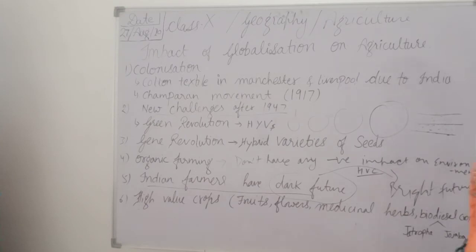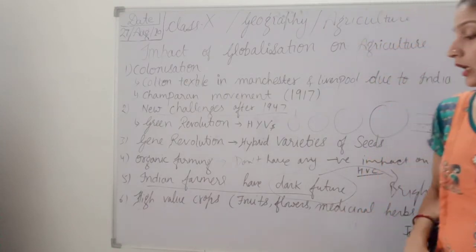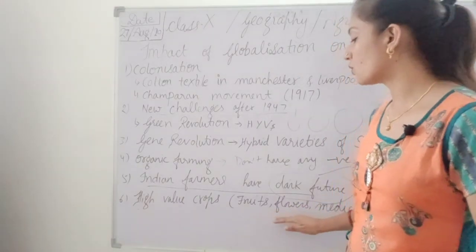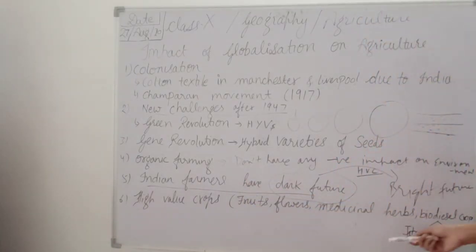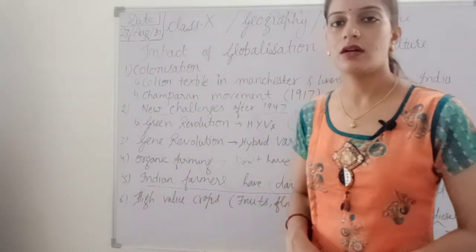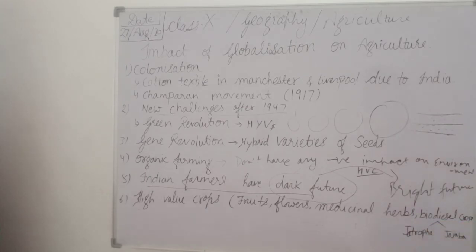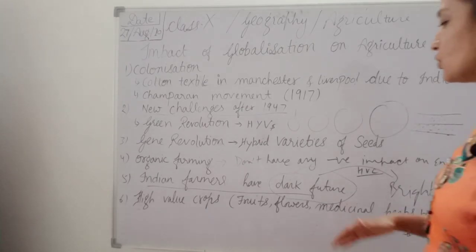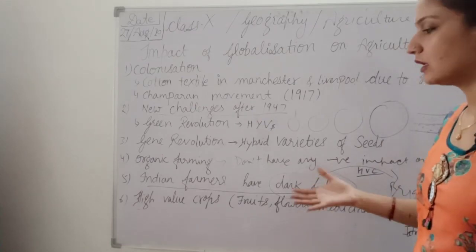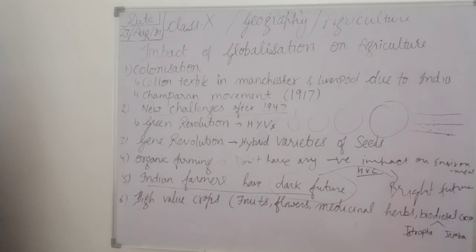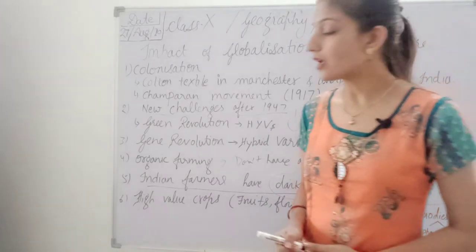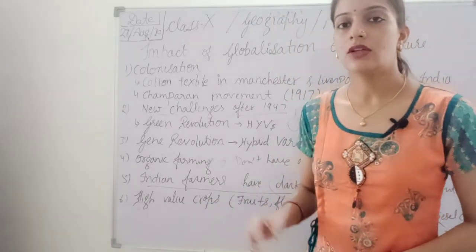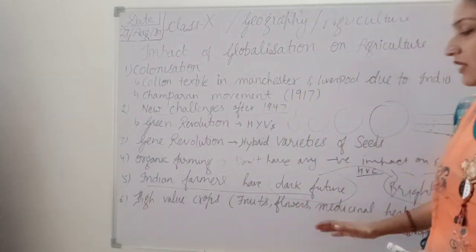The specialty of high value crops is that they require less irrigation as compared to wheat, rice, or sugarcane, and they have very good demand in industry and in the international market. If farmers grow these crops along with wheat and rice, then the dark future can be converted into a bright future. Indian farmers are not always aware about high value crops, so the government should make policies so that they come to know about high value crops and go for them.